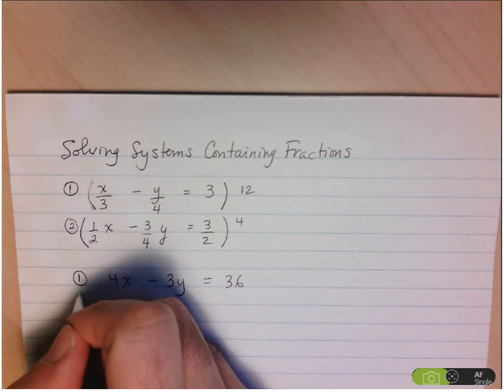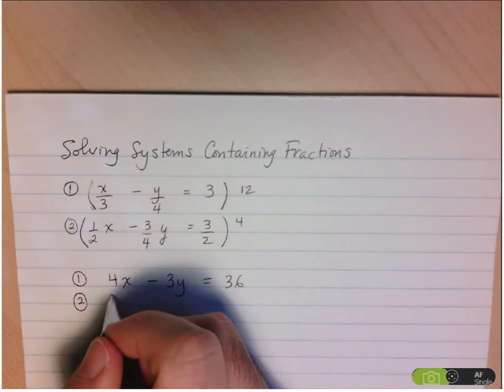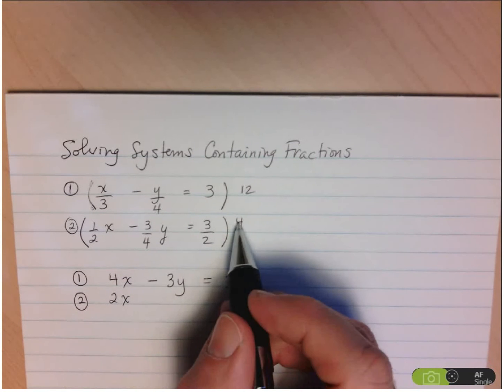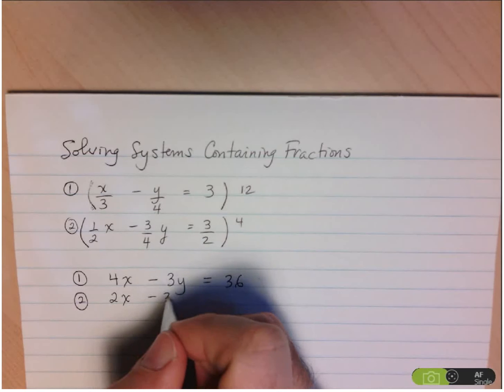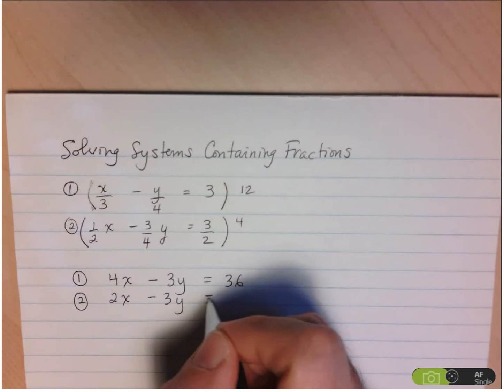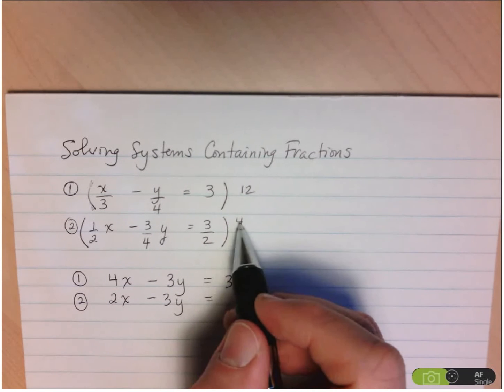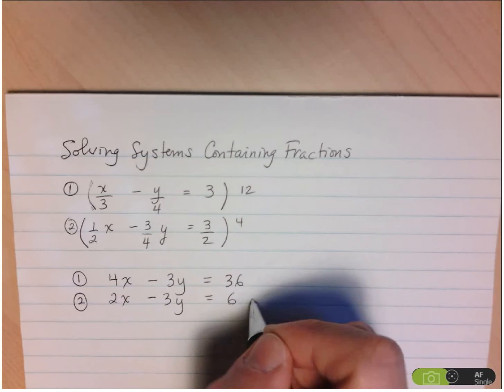And then equation 2 will now become, well, 4 times 1 half, that's 2x. 4 times 3 quarters, well, the 4s cancel out, so I'm just left with the minus 3y. And here, the 4 and the 2 simplify to 2, so 2 times 3 is 6.